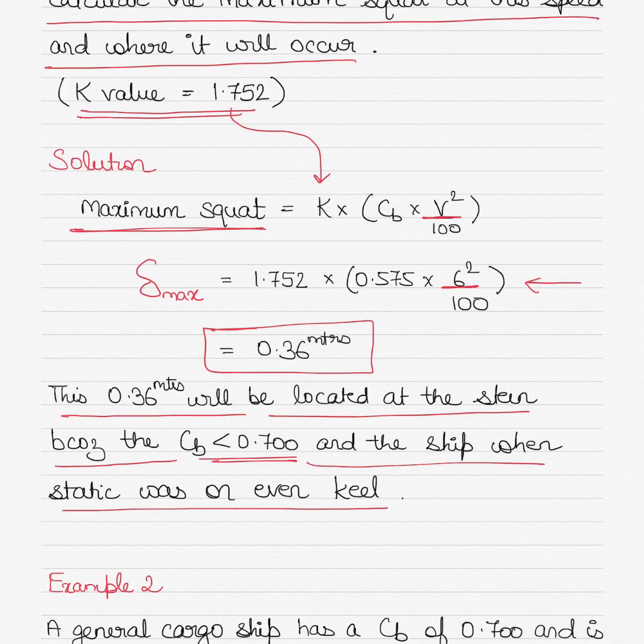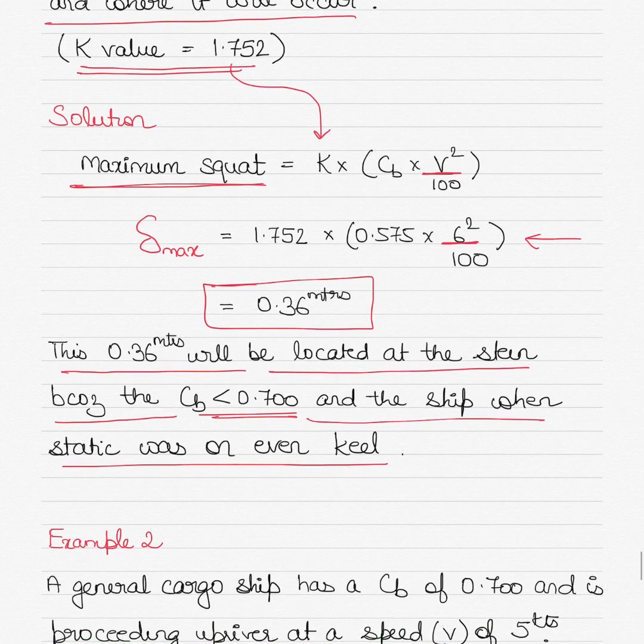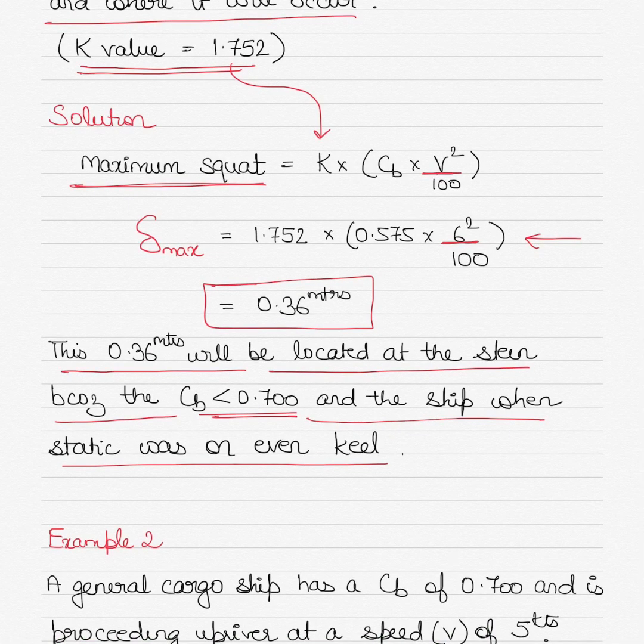Alright, let's take the second example and then I'll tell you how K is calculated. Actually I can tell you right now. K is given to us in the question, both questions here. However, you can also find out K from a K coefficient graph given to us for rectangular section rivers.